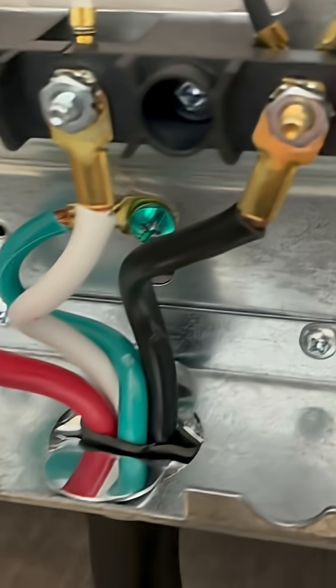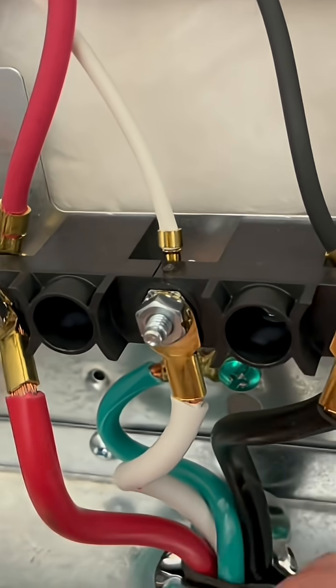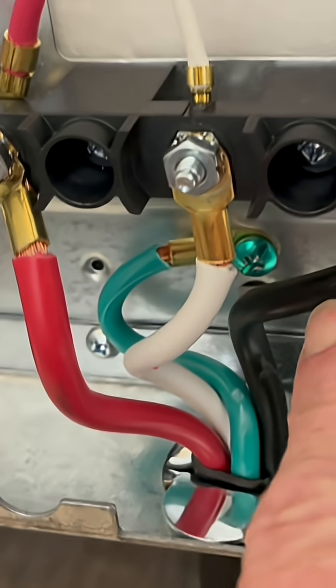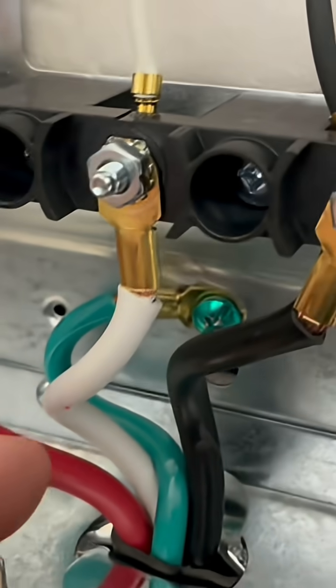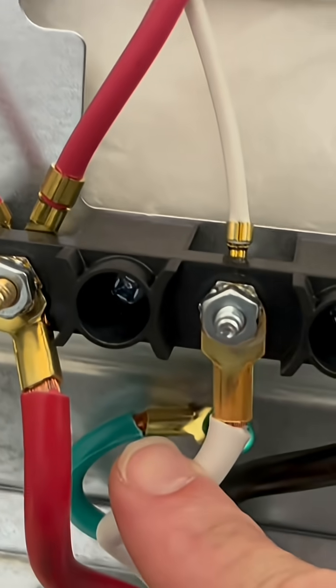Okay, this oven came with a four-prong plug, so I got red, white, black, and green. White's neutral, you got hot and hot and ground. What I need to do here is create a jumper from the white to the ground.